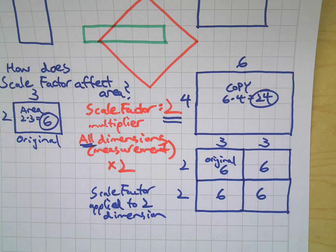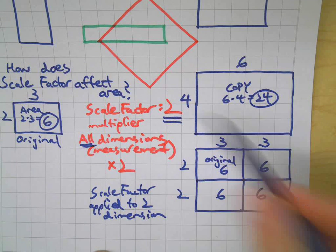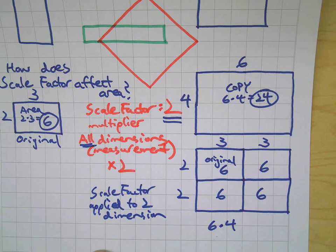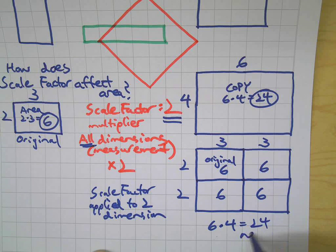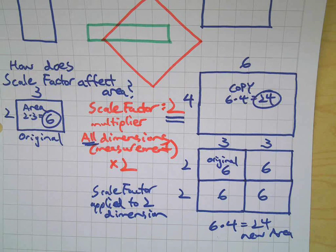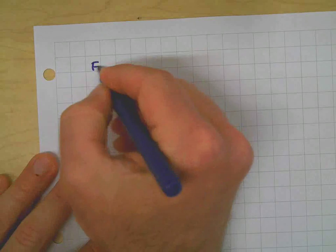So you can see how having a scale factor of two is actually the same as multiplying by four to get the new area. Let's do another example, and then we'll come to a conclusion.